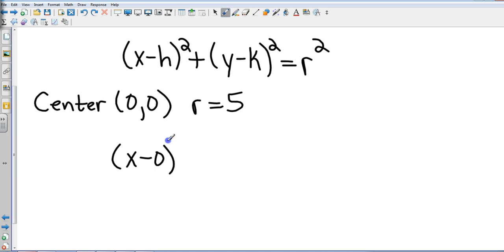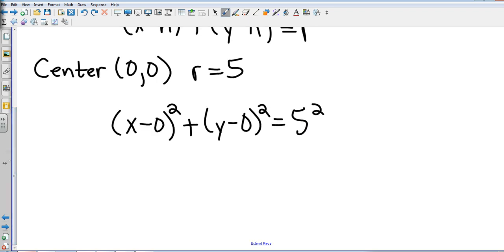Notice that we're squaring everything. Obviously x minus 0 is just x, so that's going to be x squared plus y squared equals 25. Anytime a circle has its center at the origin it will just be x squared plus y squared, and then I want to square the radius. So this would be the equation for that circle.